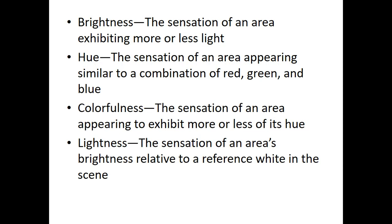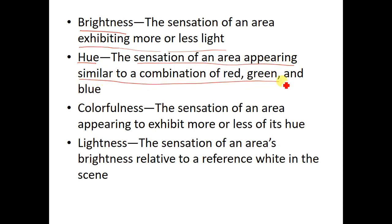We have talked about different models, and in these models we have different terms we need to discuss. First is brightness — it is basically the sensation of an area exhibiting more or less light. Second, we have hue — the sensation of an area appearing similar to a combination of red, green, and blue. When we change the proportion of red, green, and blue, we are changing the color. So the hue parameter basically provides information about the color within a given image.